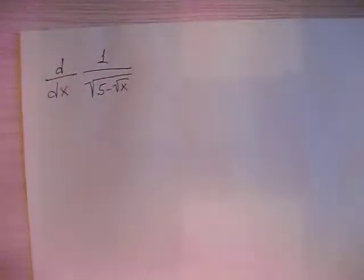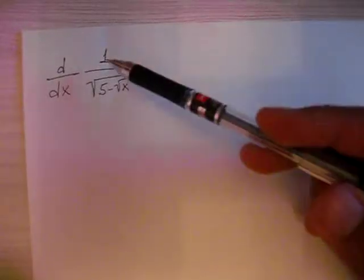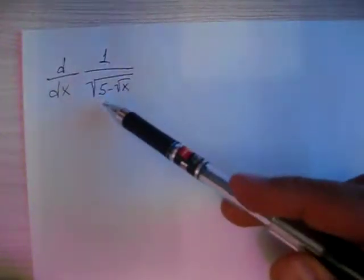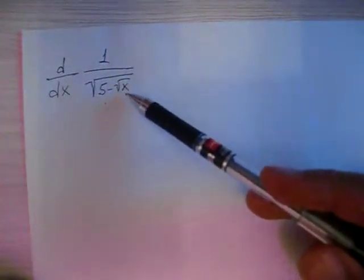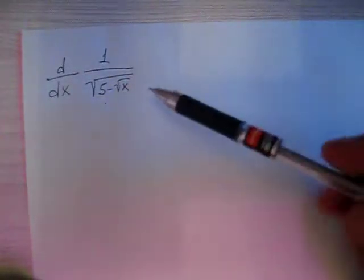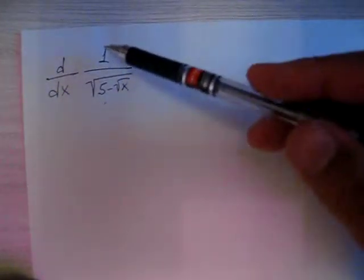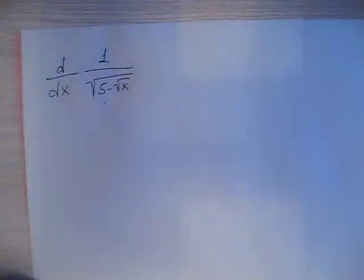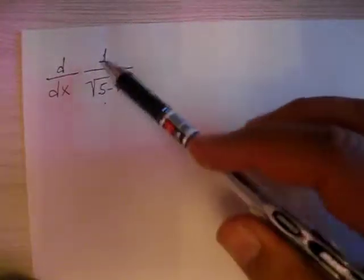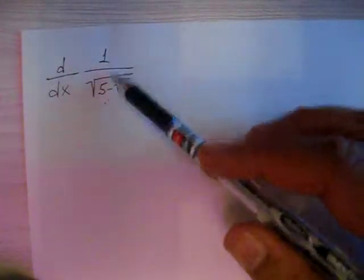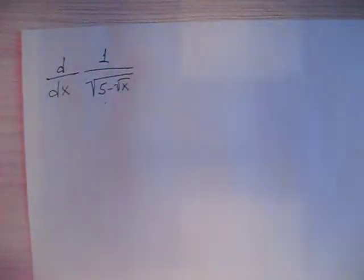Let's find the derivative of this function. Our function is 1 over the square root of 5 minus square root of x. As you can see, it is a fraction — we have a numerator and denominator — and that means it is a division, so we can use the quotient rule here.